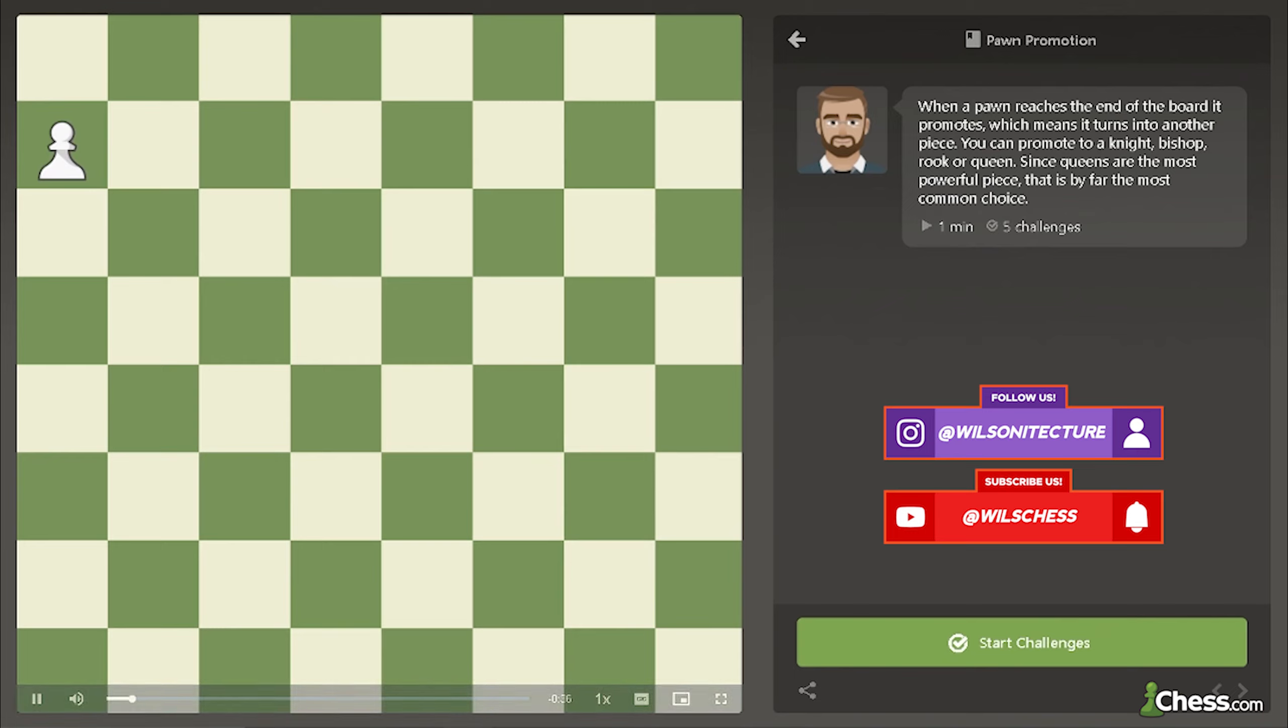Remember, your pawns are the only pieces that cannot move backwards. So what happens when they reach the other side of the board? They get a promotion. You must trade your pawn for another piece.